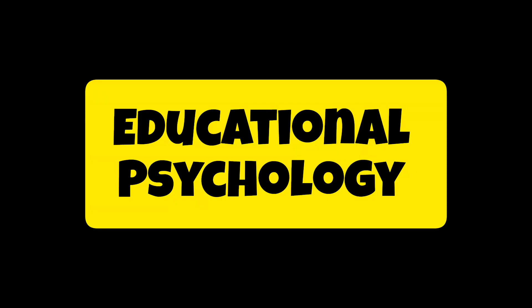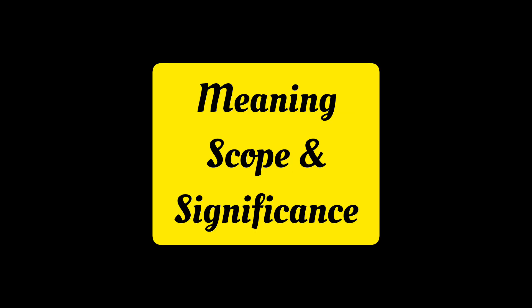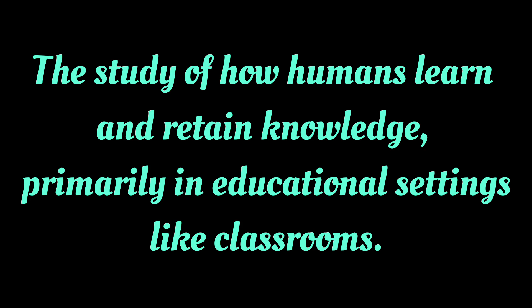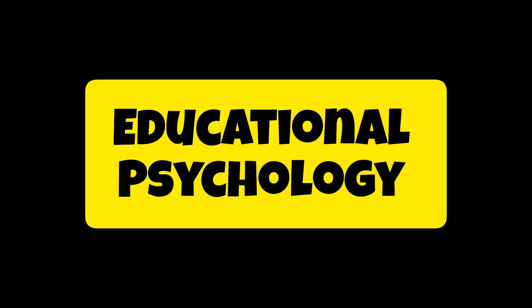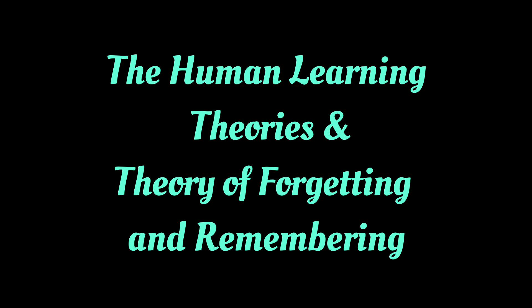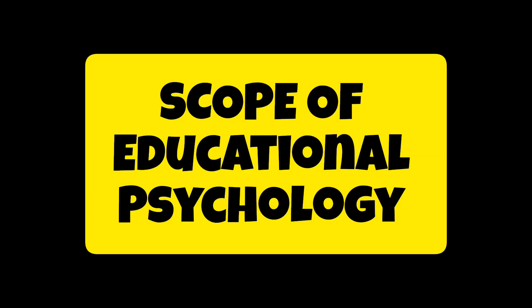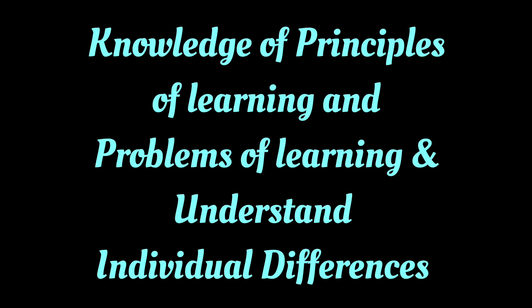What is Educational Psychology? Educational Psychology — Meaning, Scope and Significance. The meaning of Educational Psychology is the study of how humans learn and retain knowledge, primarily in educational settings like classrooms. It teaches us about human learning theories, and also the theory of forgetting and remembering. Its scope includes equipping teachers with knowledge of principles of learning and problems of learning, and helps us understand individual differences — meaning students learn at different paces, which is natural.